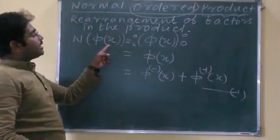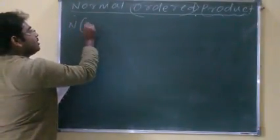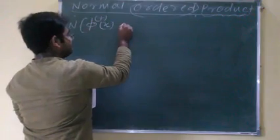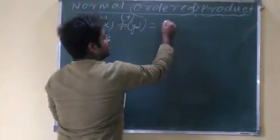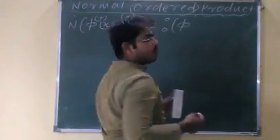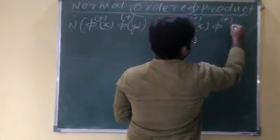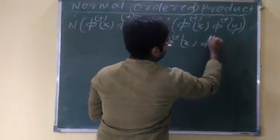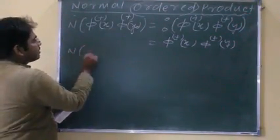Similarly, I can proceed with two terms, one for x and one for y. Let this be the normal order product of φ(x) and φ(y). Since the normal product is invariant under the product, if both terms have the same energy type, I can write φ(x) and φ(y) just as they are.